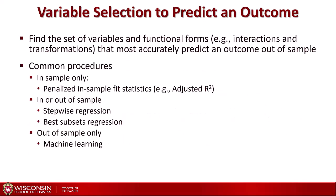This week we're going to talk a lot about variable selection in order to predict an outcome — finding the set of variables or functional forms such as quadratic terms, interactions, and other nonlinear or linear transformations that most accurately predict an outcome out of sample. There are common procedures; we've already seen adjusted R-squared, which looks in-sample at the percentage of variation in Y explained by variations in X, with a penalty added each time we add a variable. This week we'll also cover stepwise regression and best subsets regression, which can be applied either in-sample or on a held-out sample.